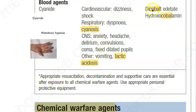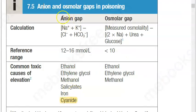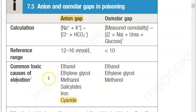So what is the treatment? Dicobalt edetate, hydroxycobalamine — remember these two: dicobalt edetate and hydroxycobalamine. Where do you use cobalt? Cyanide poisoning. In cyanide poisoning you can see that there is an anion gap, and a common toxic cause of elevation of this gap is cyanide poisoning.